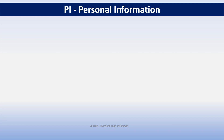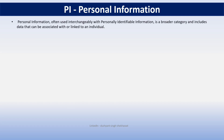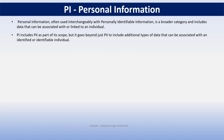Next is personal information, i.e. PI. Personal information is often used interchangeably with PII, but it is a broader category. Personal information includes personally identifiable information as part of its scope, but it goes beyond just PII to include additional types of data that can be associated with an identified or identifiable individual. In other words, all PII is considered as PI, but not all PI is PII.